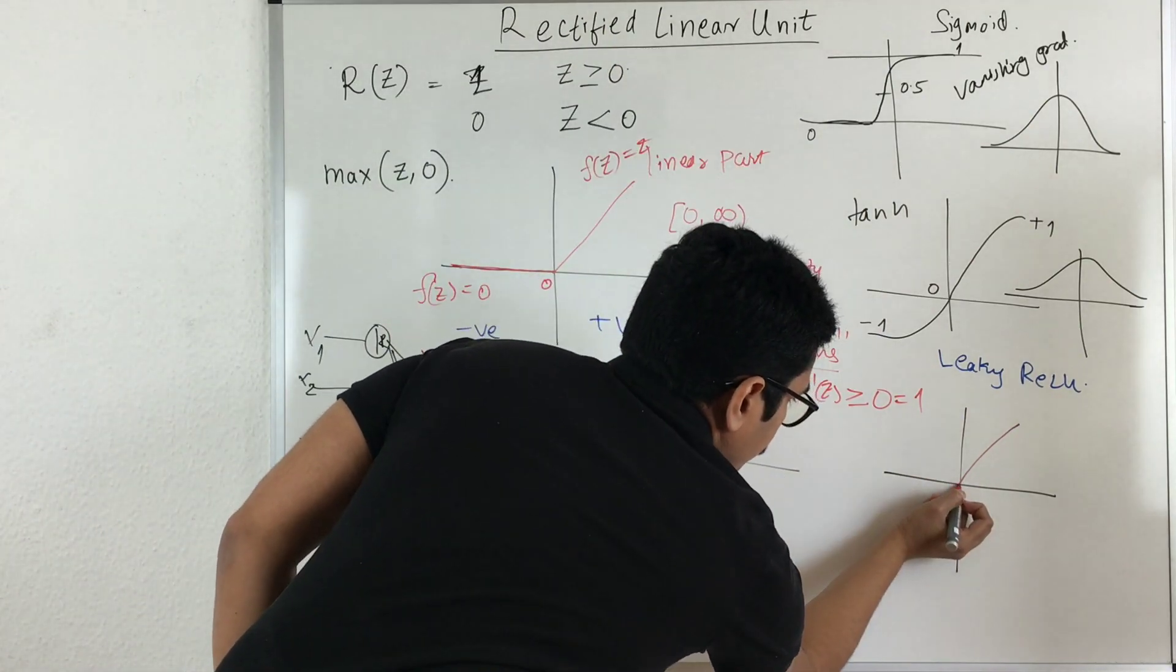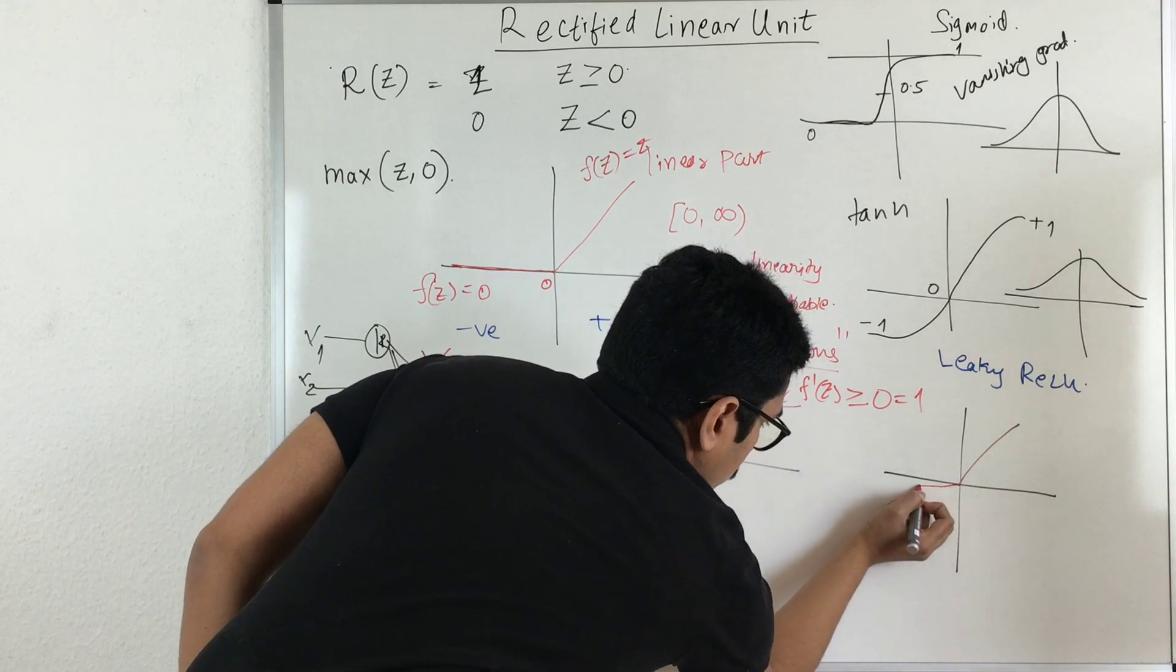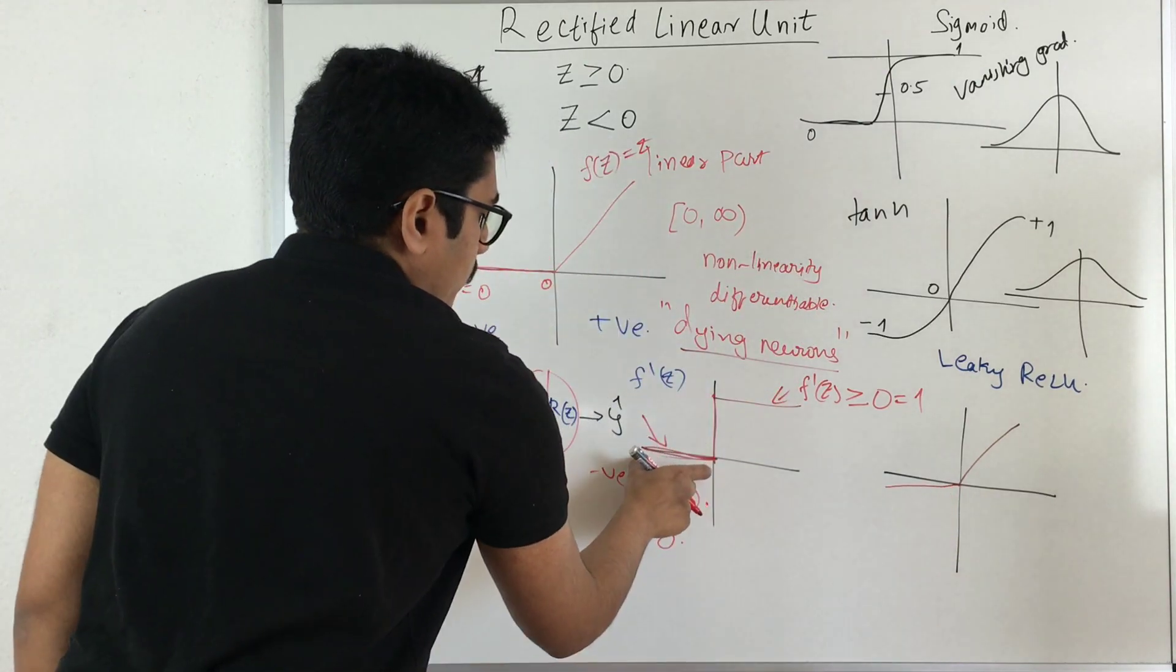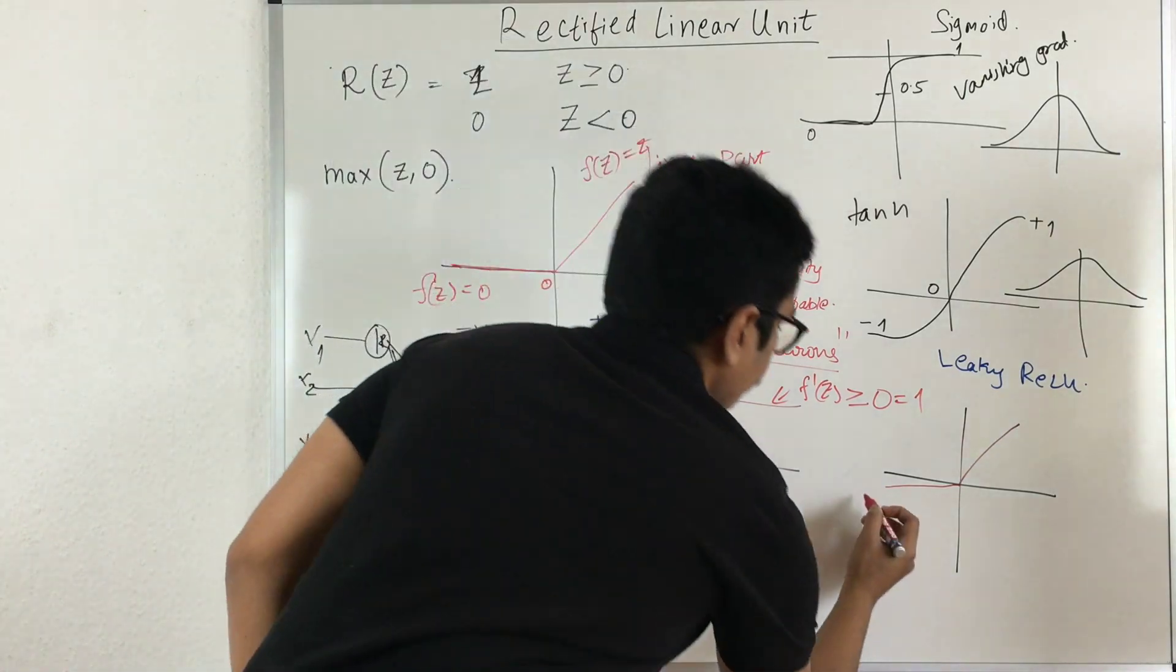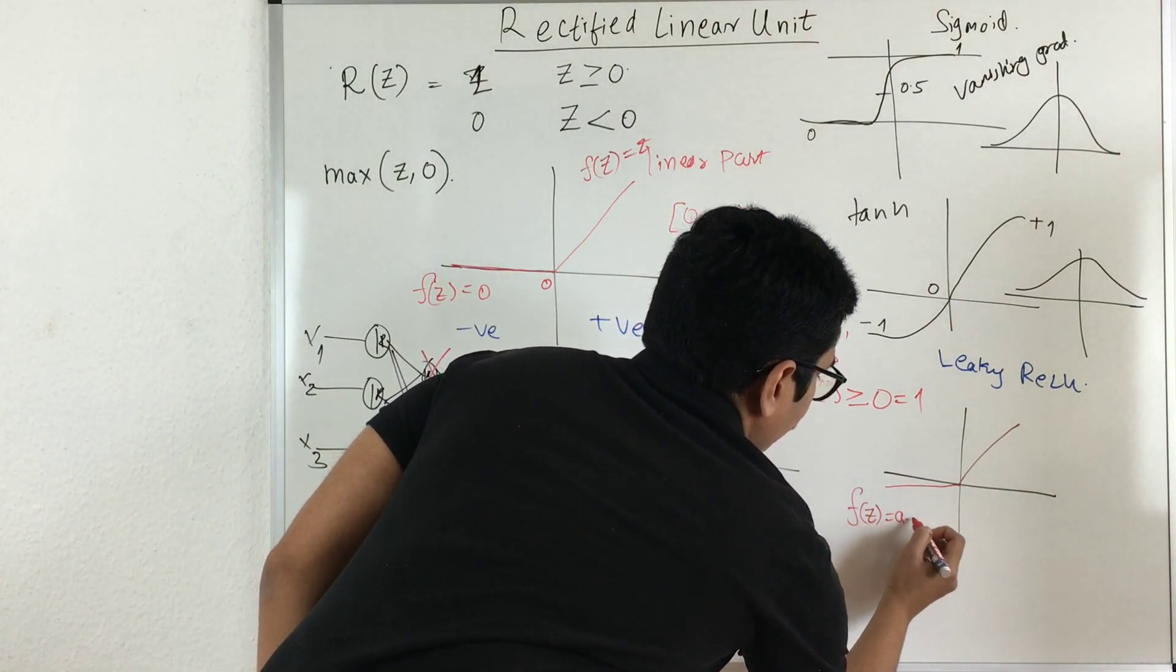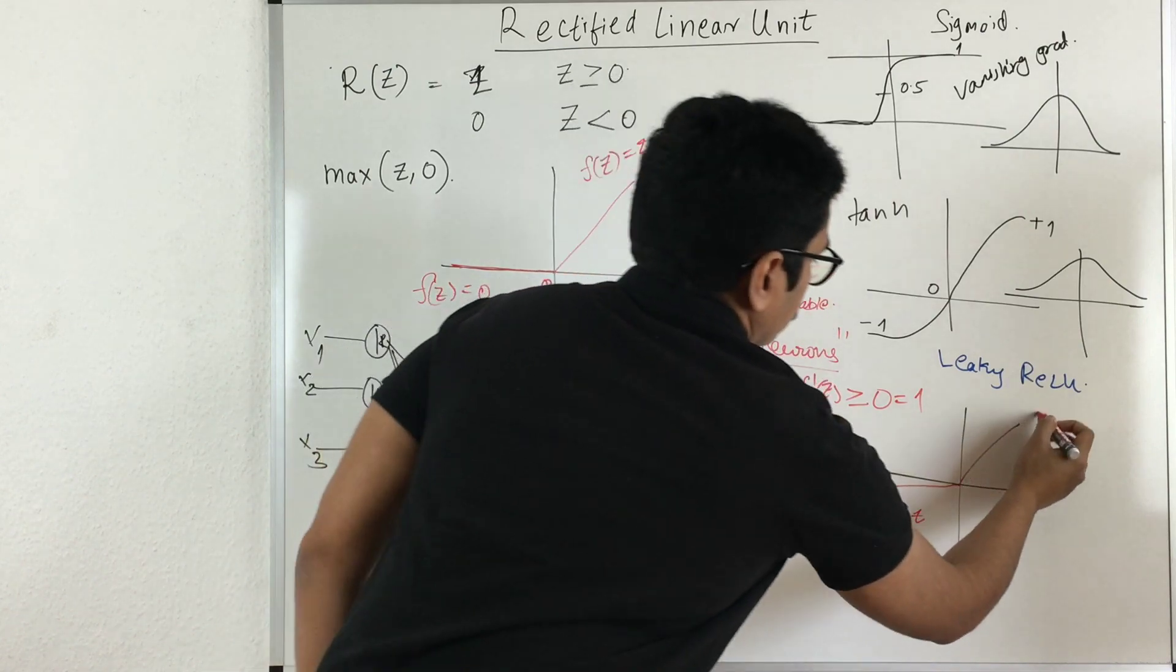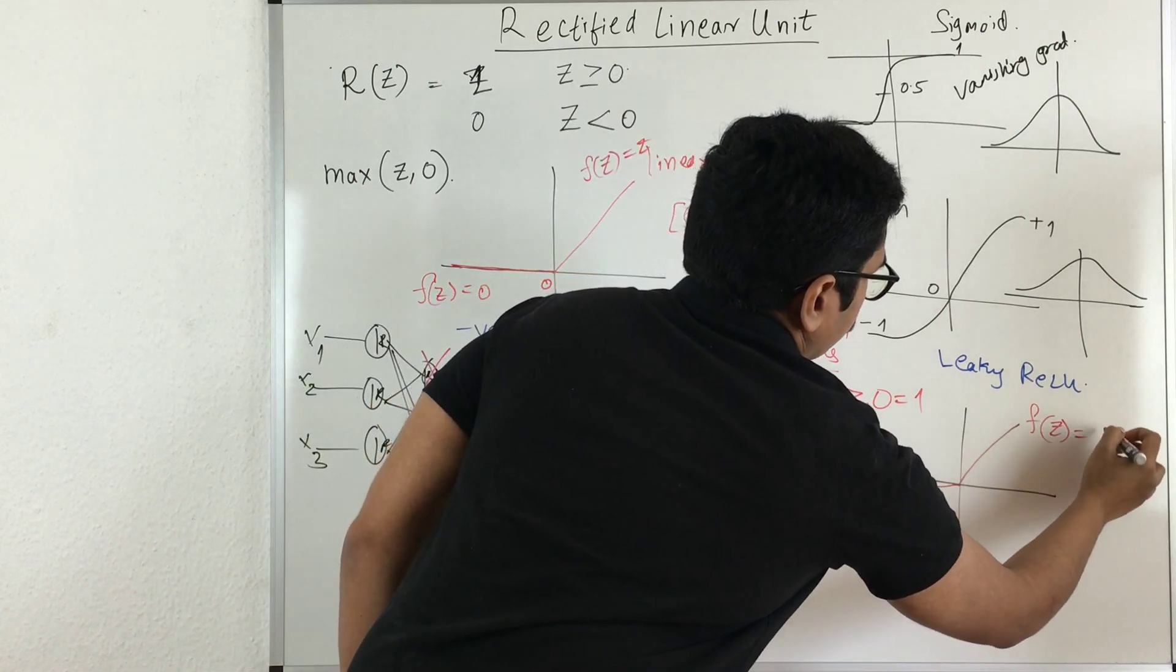So this is same as it is, but on this portion that is on the negative side you have a very small leak of this. So where here the slope was zero, here the slope is not equal to zero. So here if you have f of z it will be multiplied with some a of z.